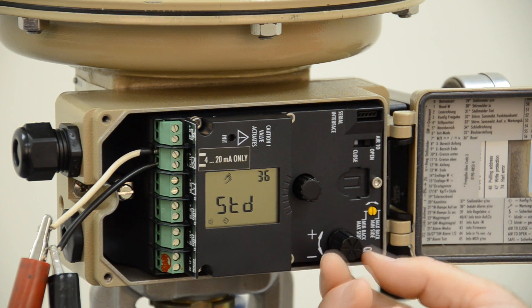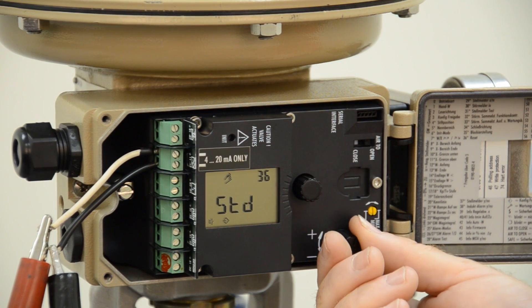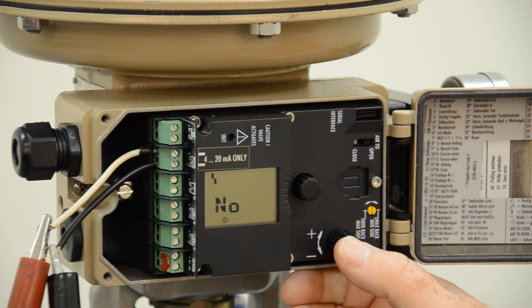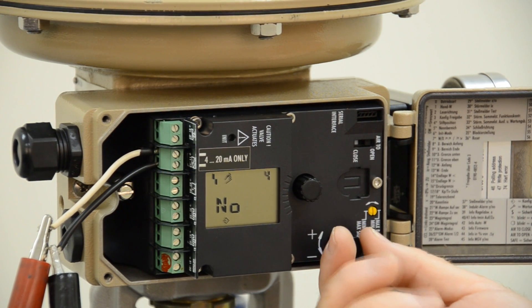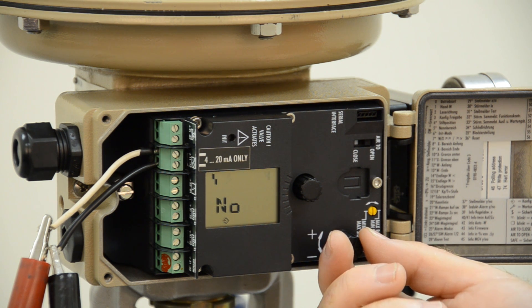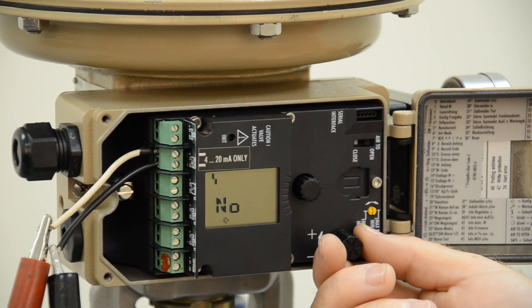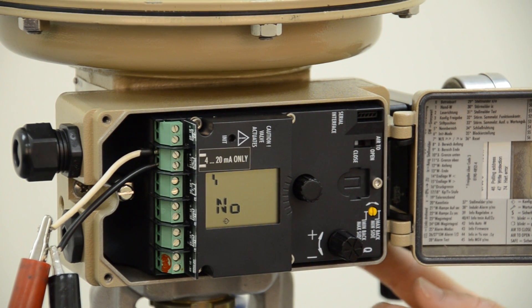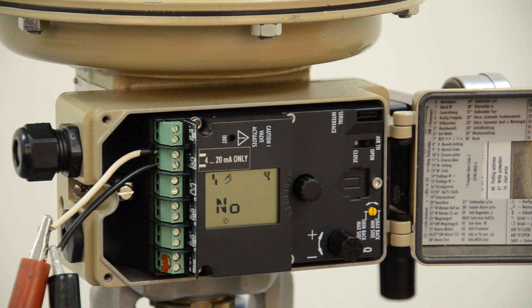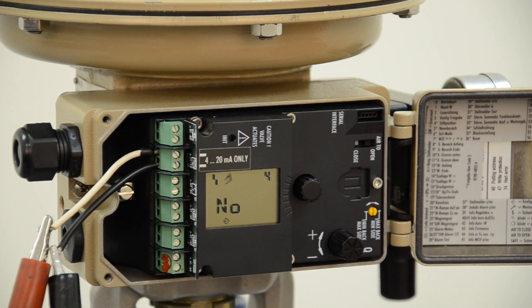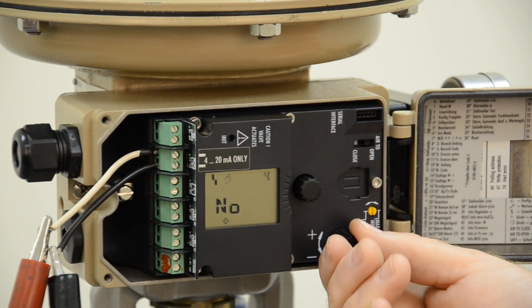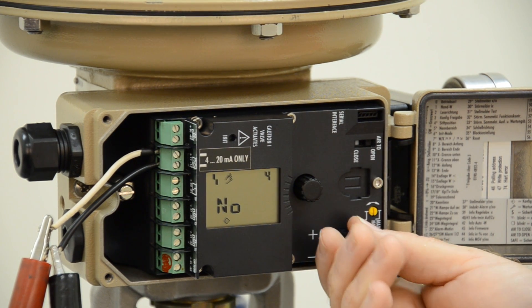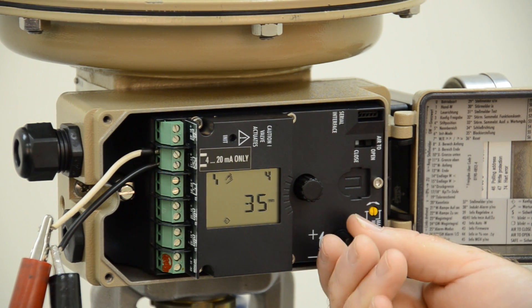Our next code will be code 4. Once we get to code 4, we press. This is going to be the setting for the positioner arm located on the back of the positioner. And depending on the type of valve, it's where the pin goes to match the valve stroke that you need. In this case, we're instructed to go to pin position 35.